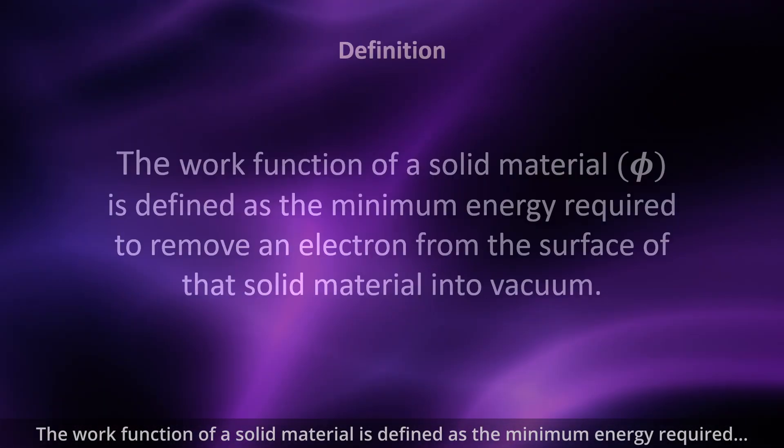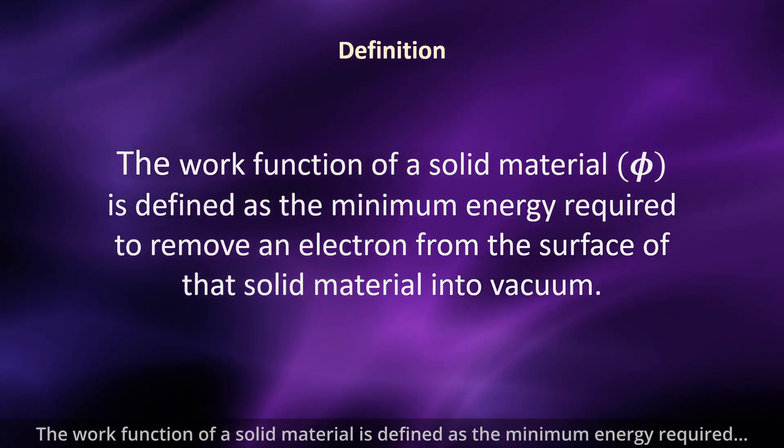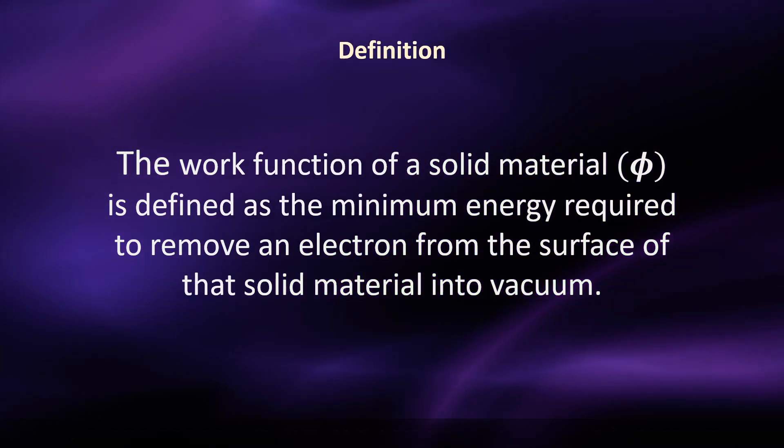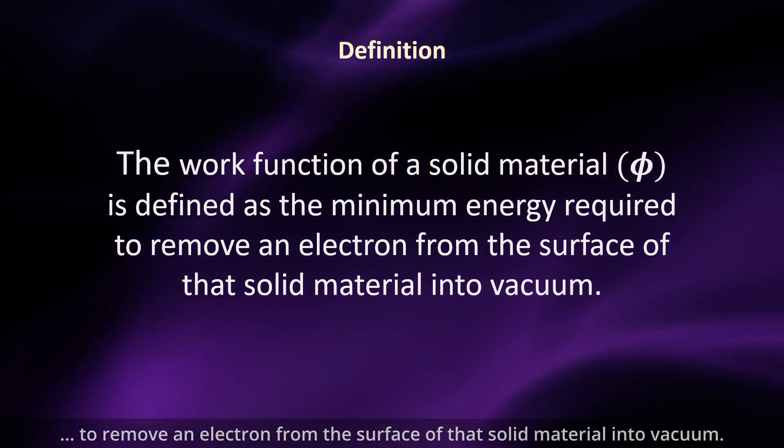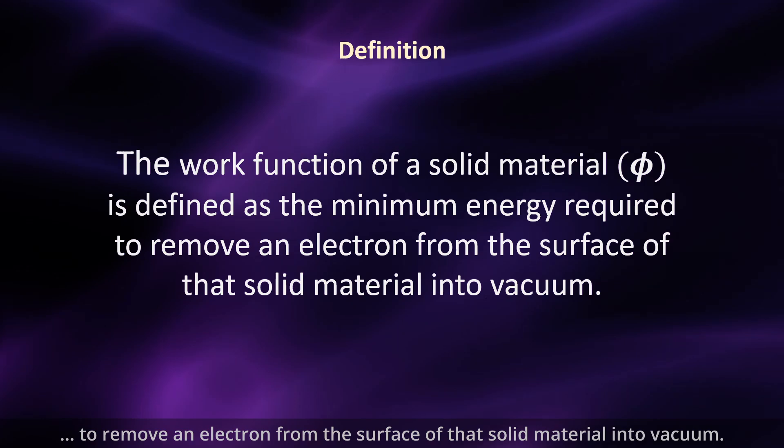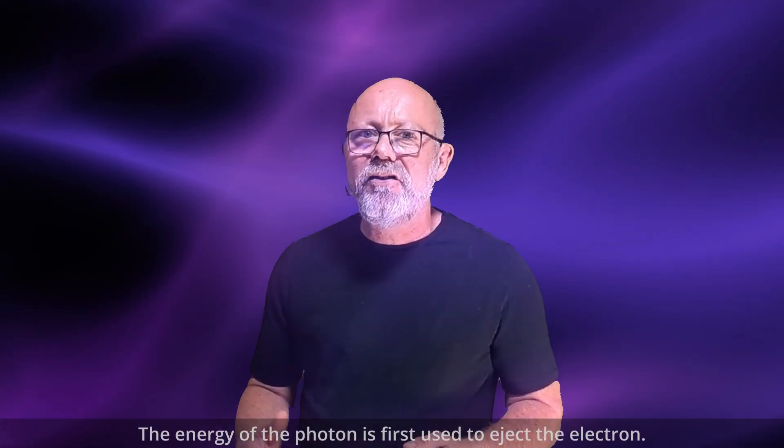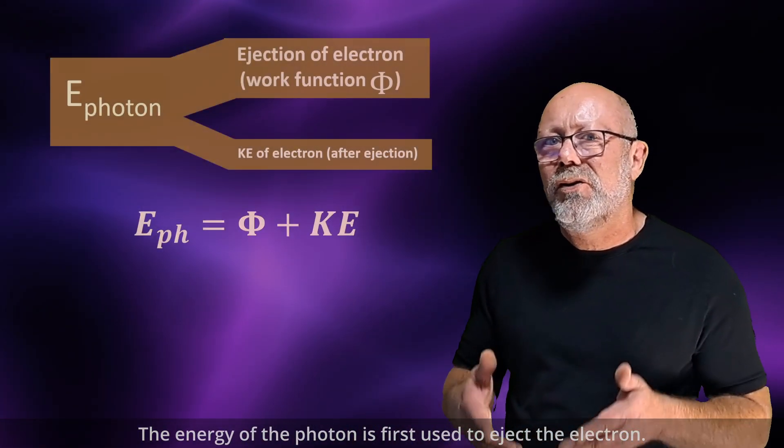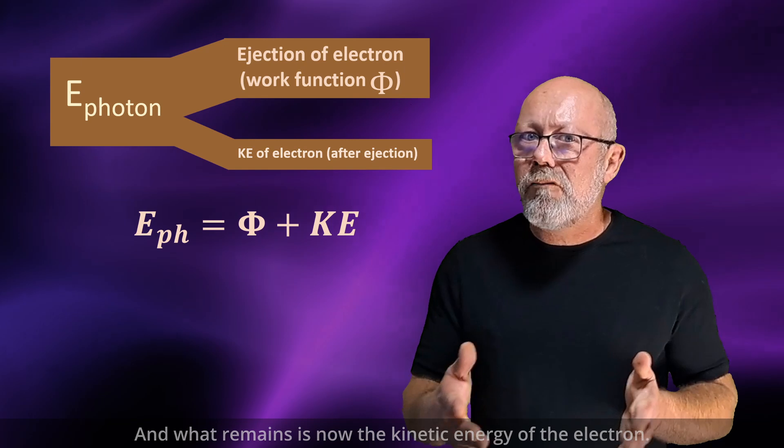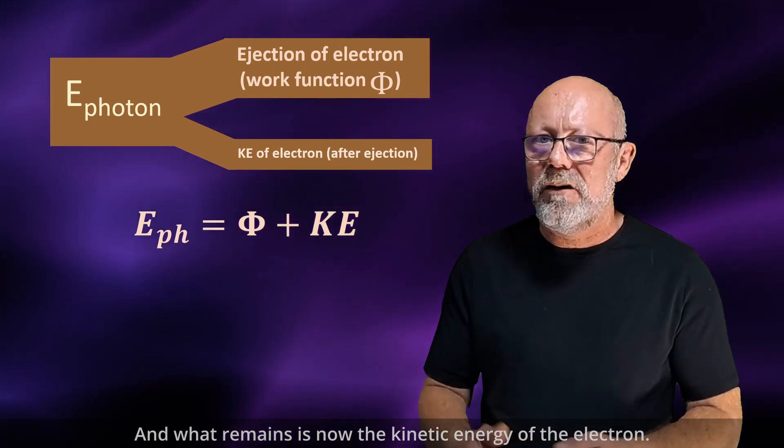The work function of a solid material is defined as the minimum energy required to remove an electron from the surface of that solid material into vacuum. The energy of the photon is first used to eject the electron, and what remains is now the kinetic energy of the electron.